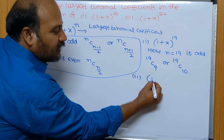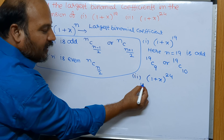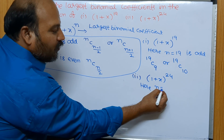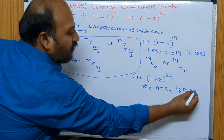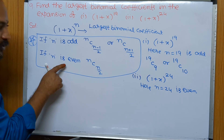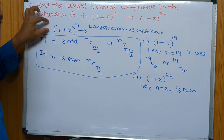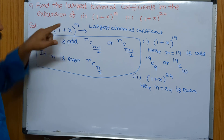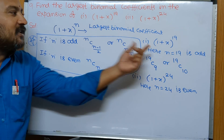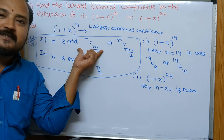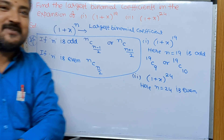In question number two, the expansion is (1+x)^24, where n = 24 which is even. Whenever n is even, in the examination you should first write: in the expansion of (1+x)^n, the largest binomial coefficient if n is odd is nC(n-1)/2 or nC(n+1)/2. Writing this step earns you marks.